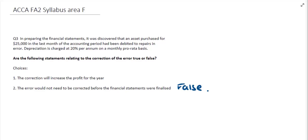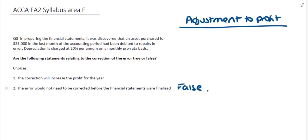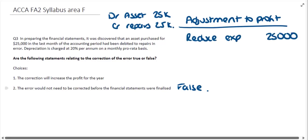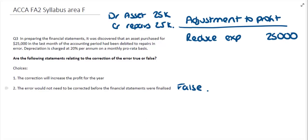For the first statement — that the correction will increase the profit for the year — we need to think about how this adjustment affects profit. There is a debit to repairs sitting in the profit and loss which shouldn't be there. To adjust for it, we debit the asset account with $25,000 and credit repairs, reducing the expense by $25,000. That reduction in expense increases our profit, since expenses reduce profit — reversing it out makes our profit bigger.